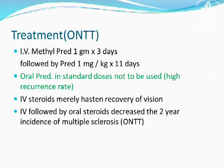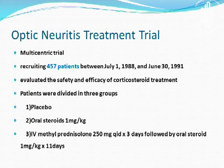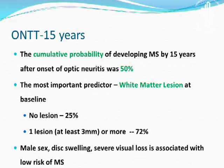At the RP center, IV dexamethasone 200mg in 5% dextrose was used and found equally effective as methylprednisolone. The ONTT trial evaluated 457 patients in three groups: placebo, oral steroids, and IV methylprednisolone. A 15-year follow-up showed a cumulative probability of developing MS of 50%. The most important predictor was white matter lesion at baseline — with no lesion there is a 25% chance of MS, and with one lesion the chance increases to 72%. Male sex, disc swelling, and severe visual loss are associated with a lower risk of MS.